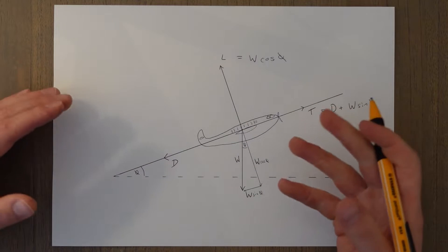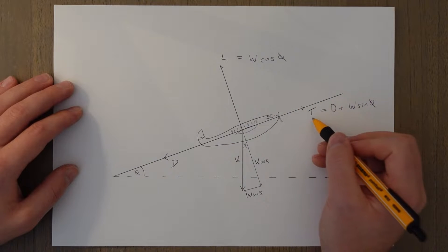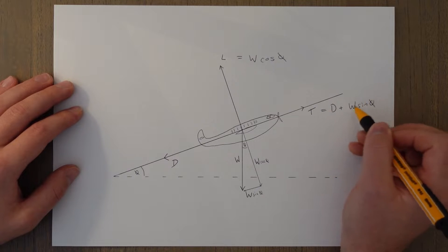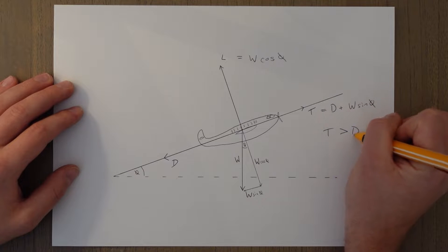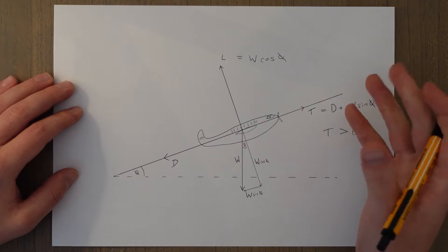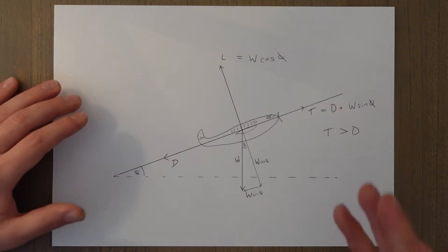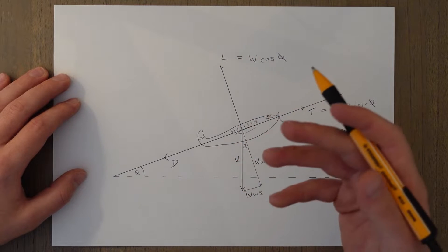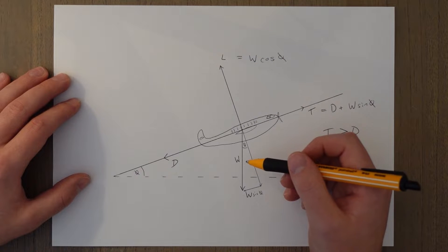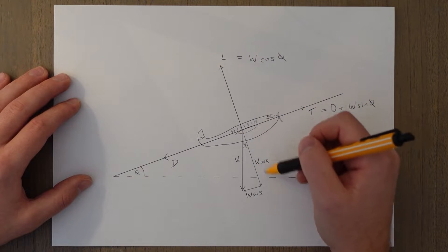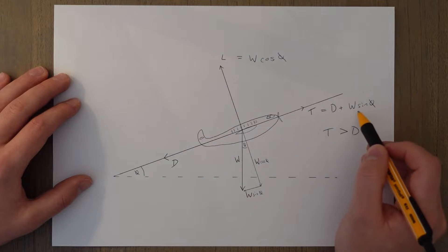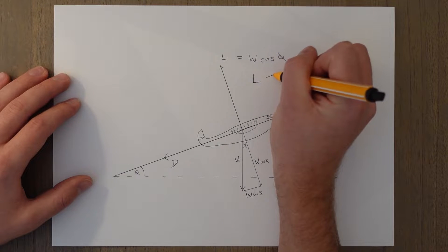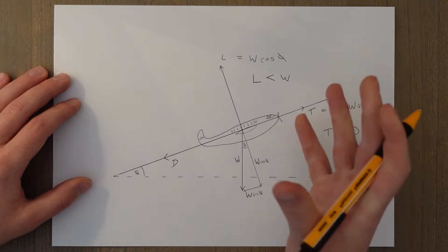The other weight component — weight acting into the slope, the cosine theta element — has to be balanced out by the lift. So lift equals W cosine theta. This means thrust has to be more than drag, because thrust now has to account for drag and this additional component of weight. Also, lift is less than weight in a climb, which seems a bit odd. Basically, lift no longer has to account for the full amount of weight — the thrust is dealing with the other proportion.